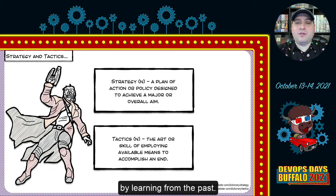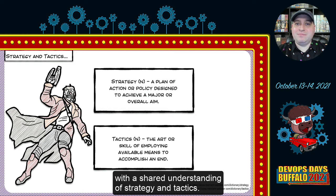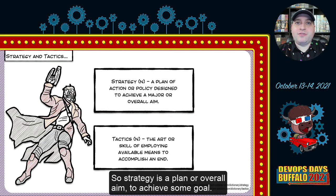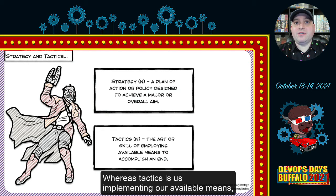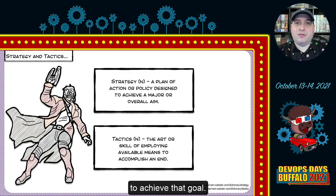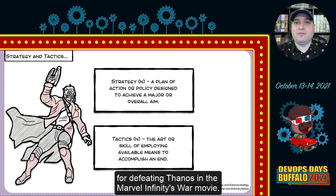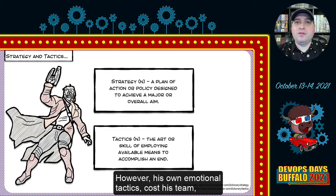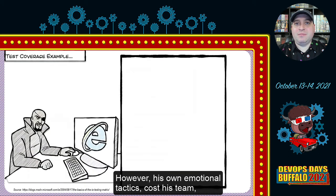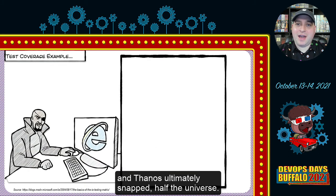Let's level set with a shared understanding of strategy and tactics. Strategy is a plan or overall aim to achieve some goal, whereas tactics is implementing our available means to achieve that goal. For instance, Star-Lord had a fantastic strategy for defeating Thanos in the Marvel Infinity War movie. However, his own emotional tactics cost his team, and Thanos ultimately snapped half the universe.